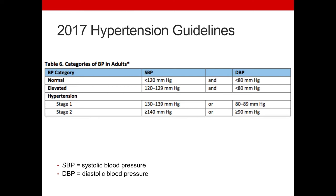However, only a small increase is expected in the number of adults requiring antihypertensive medication. One reason this change was made is that the term pre-hypertension wasn't really liked because it still suggests that you're okay. It's clear from the information reviewed that if you're in that Stage 1 category, you have about twice the risk of heart attack compared to someone with normal blood pressure, and lowering blood pressure in that category is beneficial.